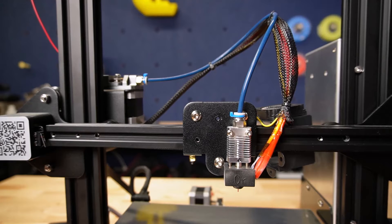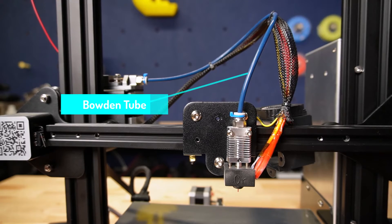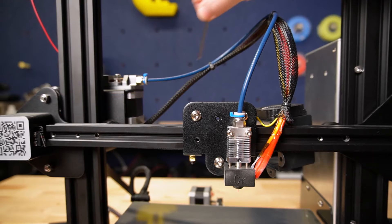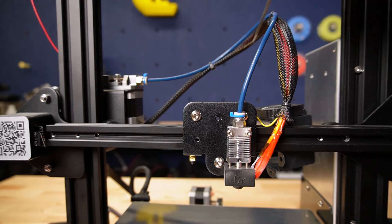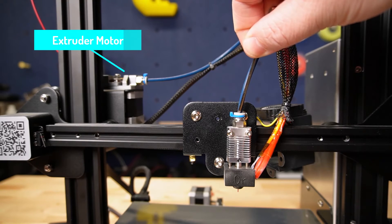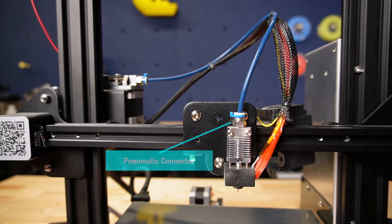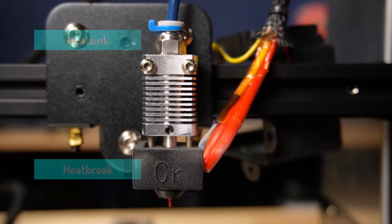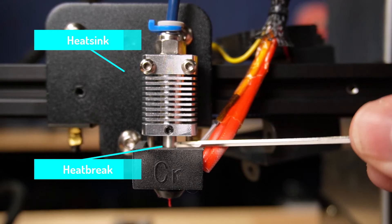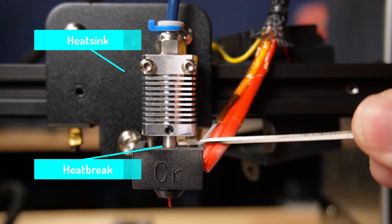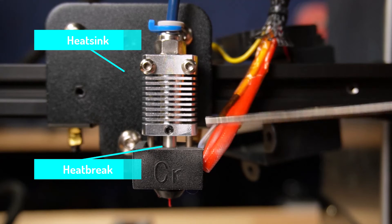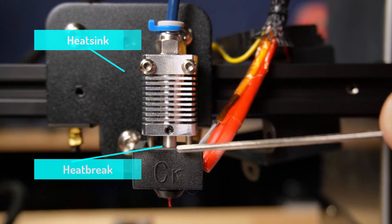Starting at the top, you'll see the Bowden tube, which normally comes in white, but people often switch out for a Capricorn tube later. Check out one of our previous videos where we do that exact upgrade. This tube is what directs the filament from the extruder motor through this pneumatic connector, all the way down through the heat sink to the heat break. The heat break is a small part between the heat sink and the heater block, which acts to transfer minimal amounts of excess heat up through the heat sink. The heat sink acts to dissipate the heat from the heater block so it doesn't melt the filament too early before it gets to the correct spot in the nozzle.